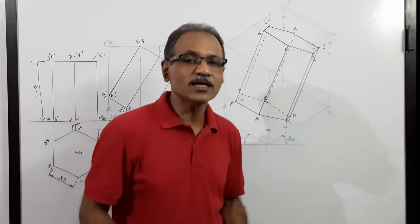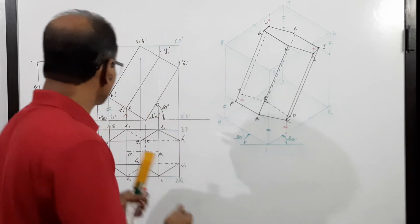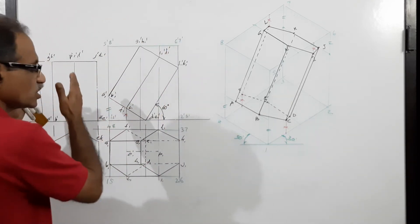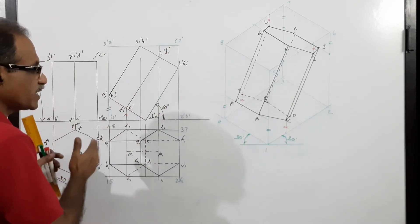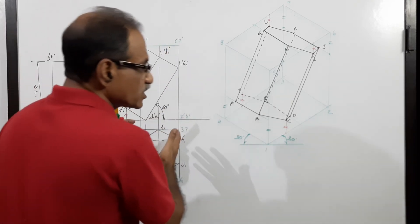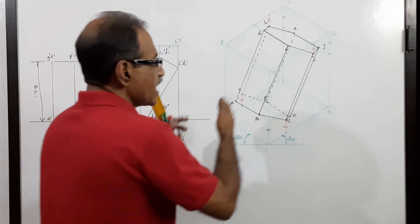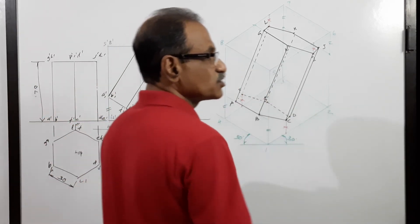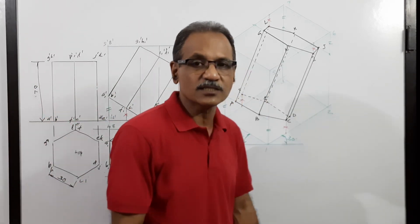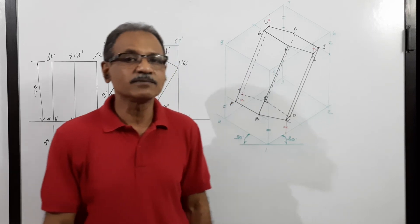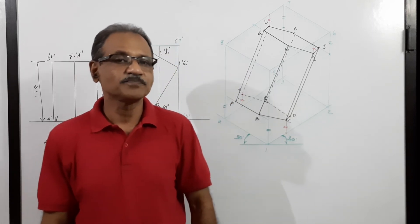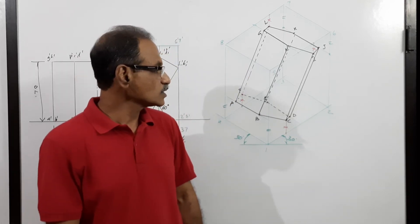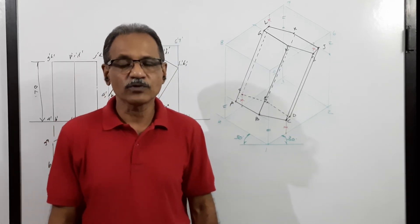This is a slightly difficult question that consumes a lot of time, because you have to draw the simple position plan and elevation, then the tilted position, and then the isometric view. While drawing this, you have to be extremely careful to transfer the correct distances. Take your time and be very careful.